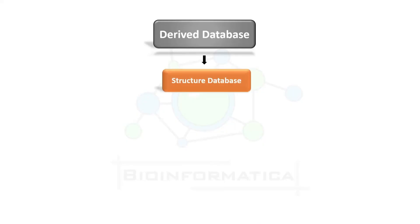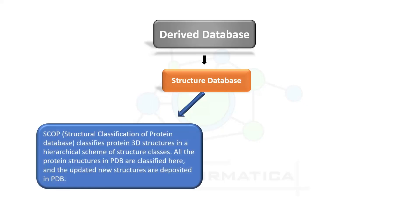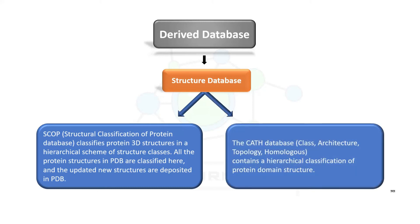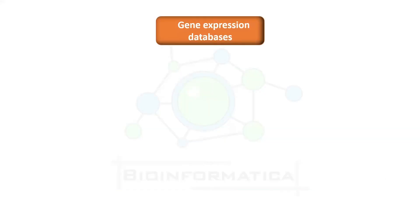First, the Structure Database consists of SCOP — Structural Classification of Proteins Database — and CAT — Class, Architecture, Topology, Homology. All protein structures in PDB are classified here, and updated new structures are deposited in PDB. The CAT database contains a hierarchical classification of protein domain structure.